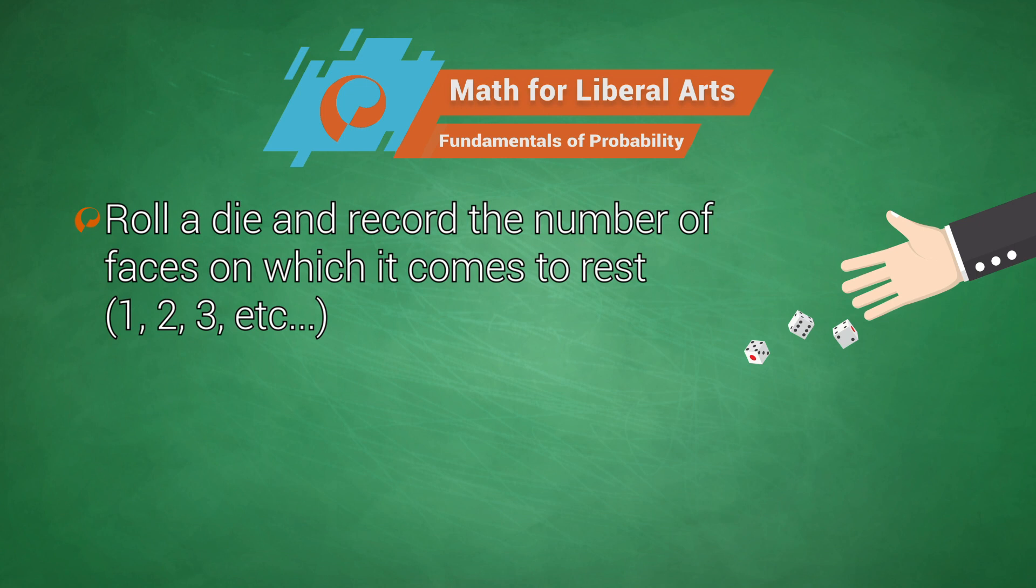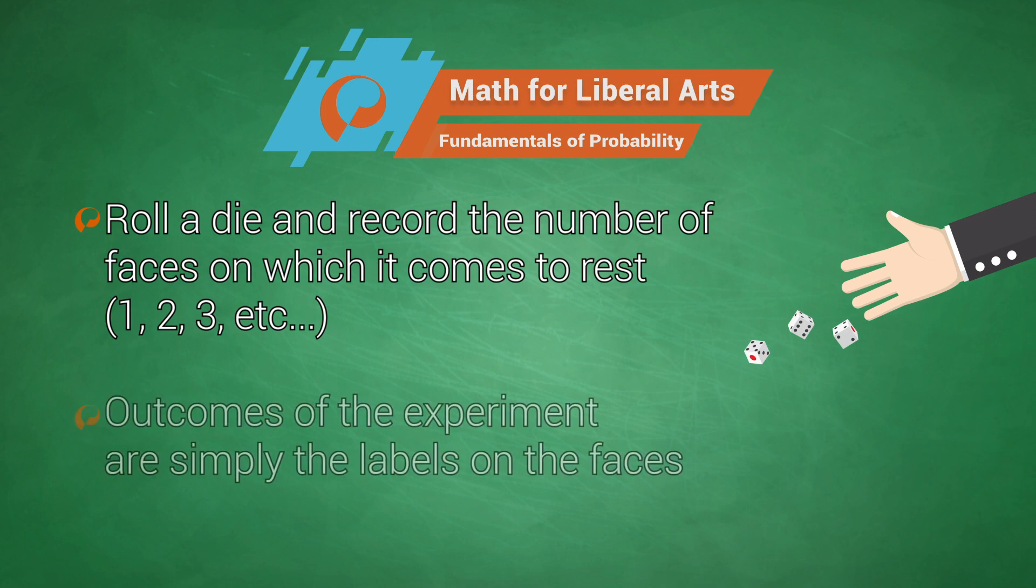For example, if you roll an eight-sided die and record the number of faces on which it comes to rest, the outcomes of the experiment are simply the labels on the faces.